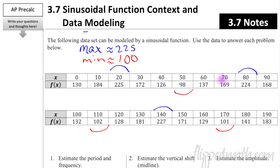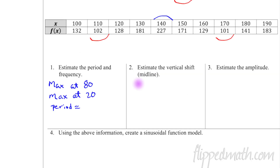Now we need to estimate the period and frequency. Between the maximum and minimum the function should be at zero. We have a maximum at x = 20 and another maximum at x = 80. Going from 20 to 80 is one full cycle, so the period is 80 minus 20 = 60. Once we know the period is 60, the frequency is one over the period, so frequency equals 1/60.